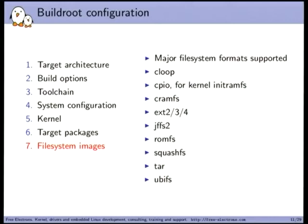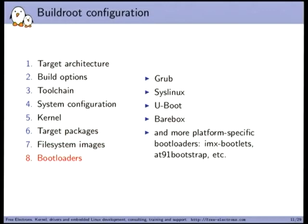You can configure which filesystem format to generate: ext2/3/4, but also embedded-specific filesystems like UBIFS or JFFS2 for flash, or SquashFS for read-only filesystems. A read-only SquashFS root can limit filesystem corruptions — useful for things like museum exhibition Raspberry Pis. You can also build bootloaders: GRUB, Syslinux, U-Boot, Barebox, and a bunch of platform-specific bootloaders, covering all aspects of your embedded Linux system.